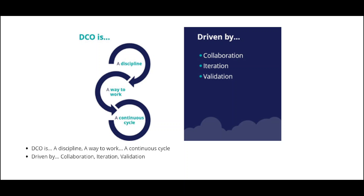The benefit of DCO is you need not create time-consuming requirements documentation. Instead, you capture all the information necessary to build an application directly in the Pega platform itself — in App Studio. From business outcomes to technical components to implement the micro journey, everything is captured in the Pega platform. Epics, backlogs, user stories — you can capture them directly in App Studio.